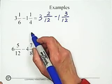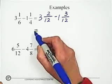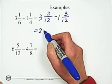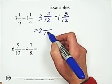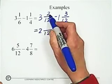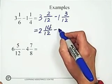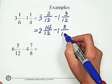Then we need a borrowing 1 from whole number portion. 3 becomes 2. Add the denominator to the numerator, which is 14, and minus 1 and 3 over 12.